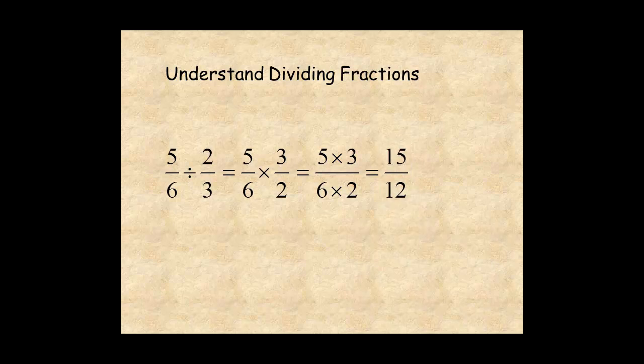Since fifteen and twelve have a common factor of three, simplify the fraction by dividing numerator and denominator by three for five-fourths.